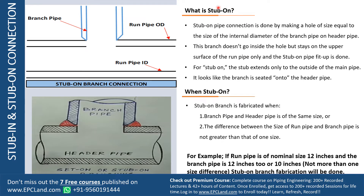In stub-on, the pipe connection is done by making a hole equal to the inside diameter of the branch. This is our header line and we are trying to make a branch connection from this pipe. If we are going for stub-on connection, then the hole required inside the header pipe is equal to the inside diameter of the branch. This branch does not go inside the hole but stays on the outer surface of the run pipe. For stub-on, the stub extends only to the outside of the main pipe — it looks like the branch is seated onto the header pipe.